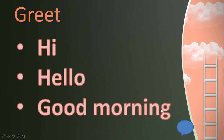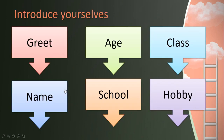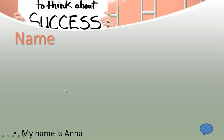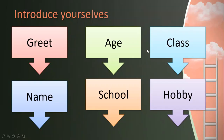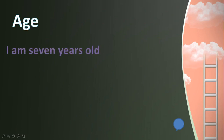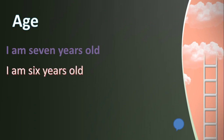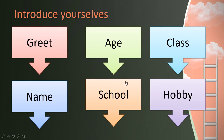You need to greet someone first and then you tell out your name — 'My name is Anna', for example, or 'My name is John'. After your greeting, you tell out your name and then you tell your age. So when you are in Year 1, most probably you will be 7 years old. You can say 'I am 7 years old' or 'I am 6 years old'. After your name, you need to tell out your age and then your school.